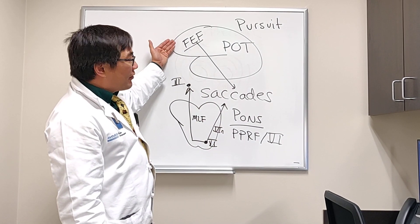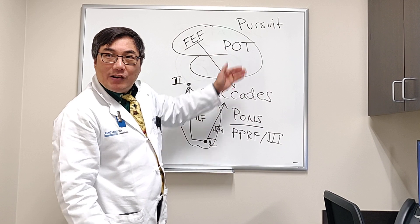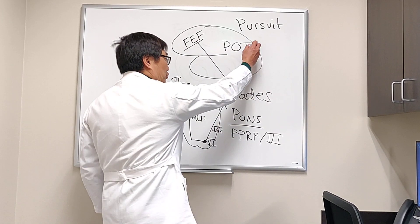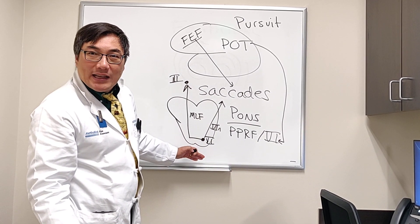So instead of contralateral frontal eye field firing for saccades, we have ipsilateral parietal-occipital temporal lobe firing for pursuit. It runs down to the exact same location in the pons for horizontal gaze.